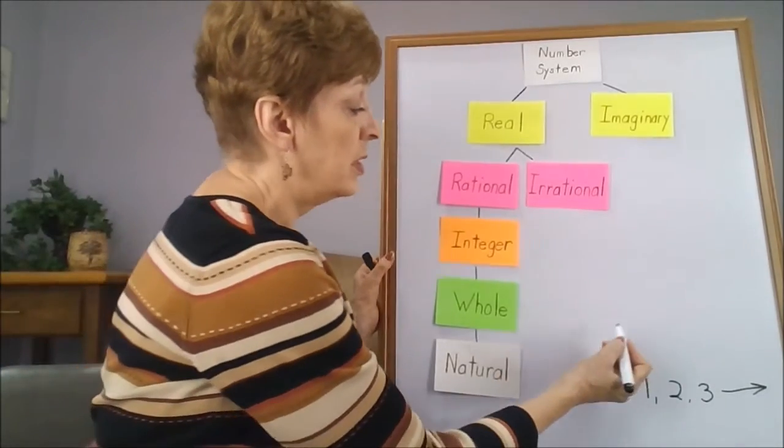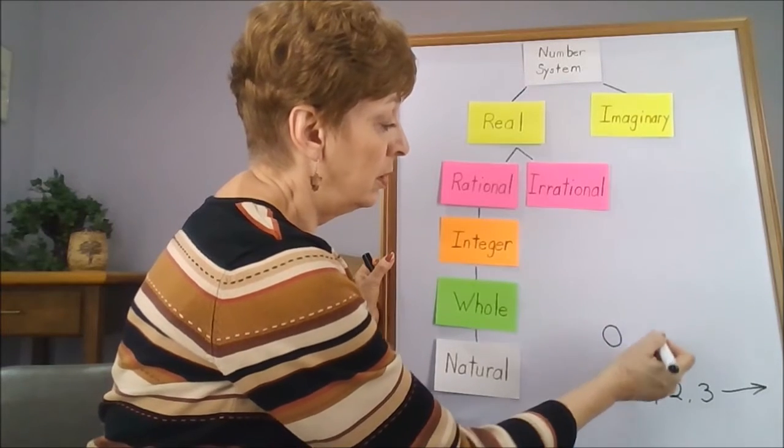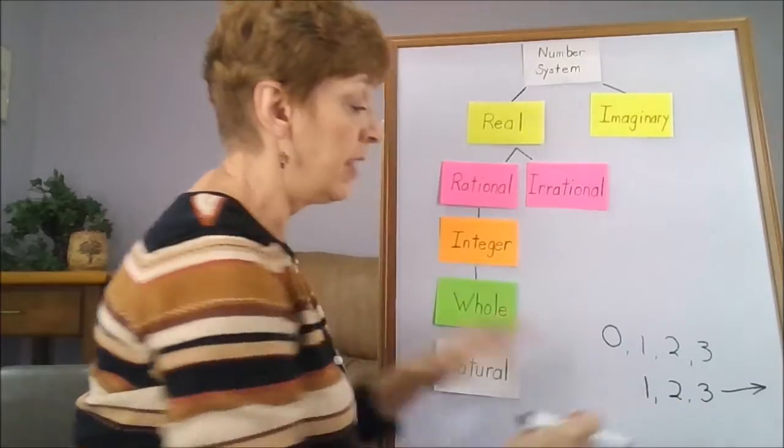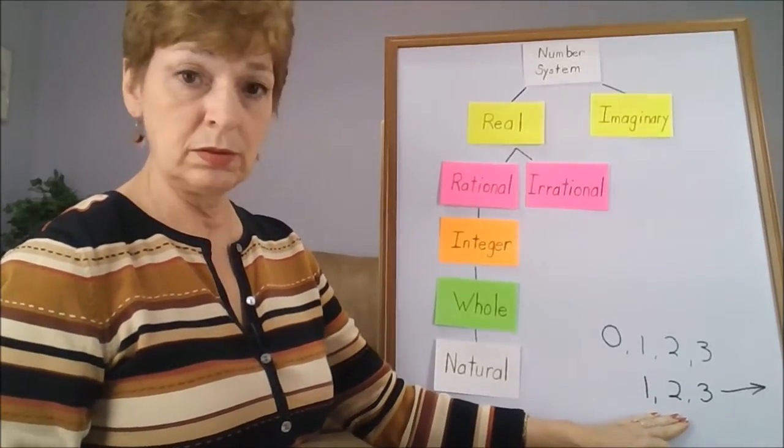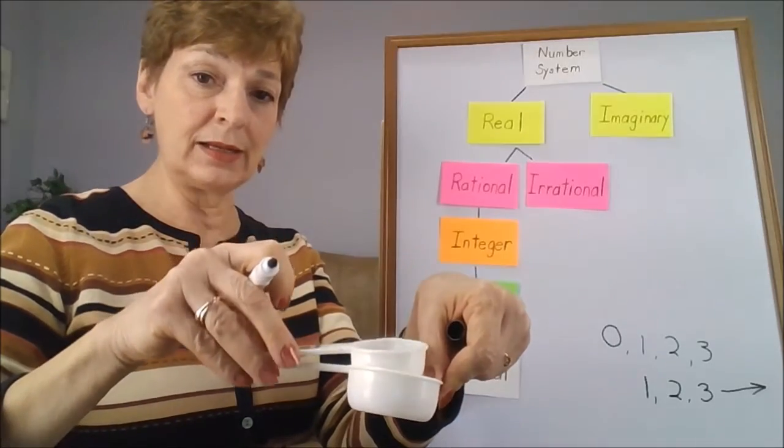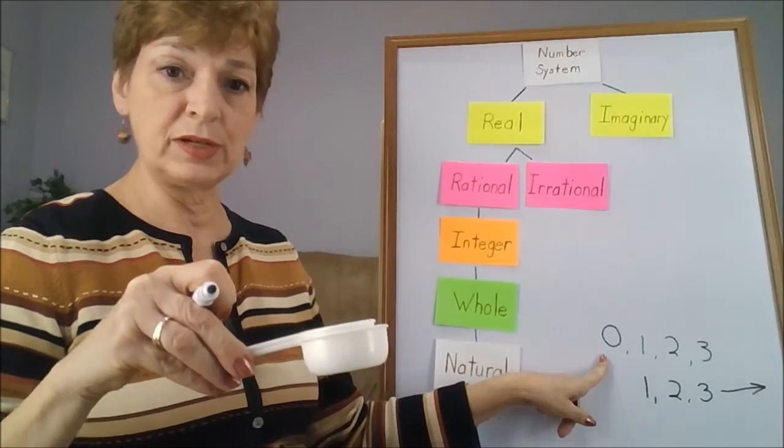Whole numbers, the next category bump up, also includes the 0, 1, 2, and 3. You can see that the original category is then included in the second larger category, but we've added something to it, which of course makes that a larger category.